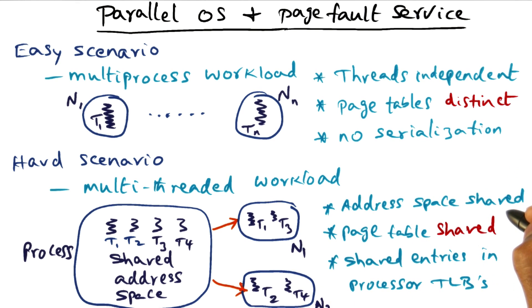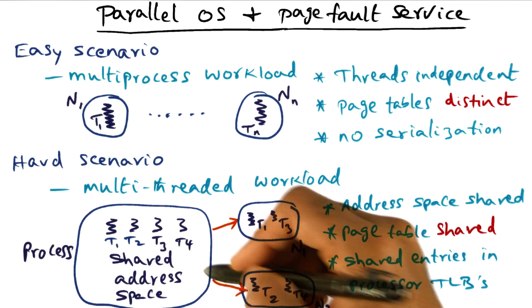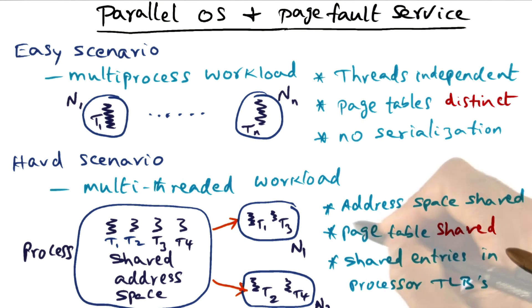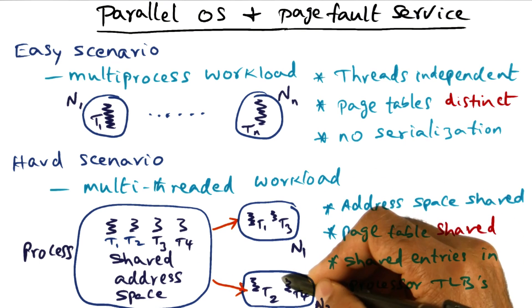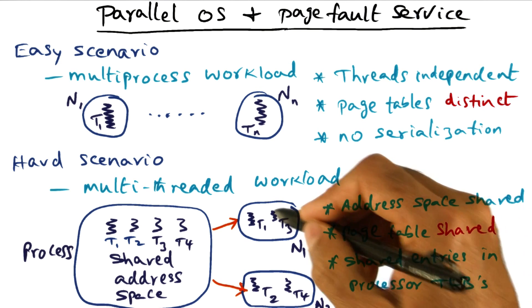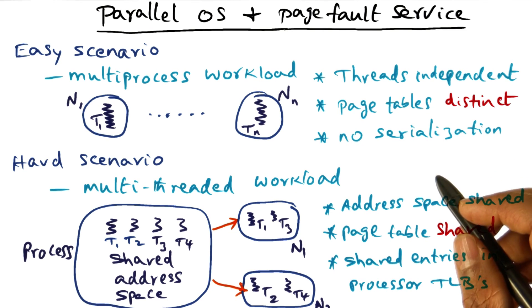If you naively think about what the parallel operating system would be doing in this scenario, the address space is shared, and therefore the page table is shared. Since the threads are executing on different processors, the TLBs will have shared entries because they are accessing the same address space.